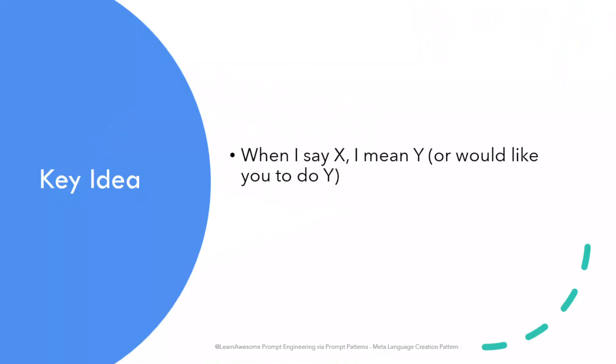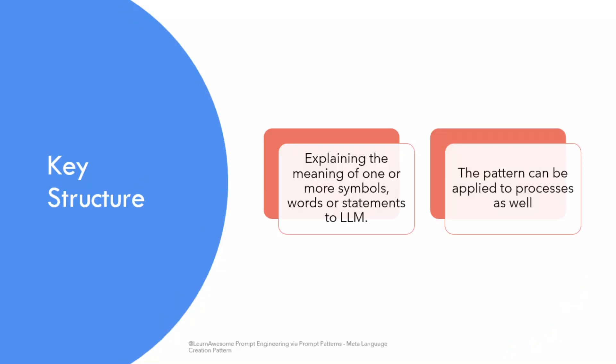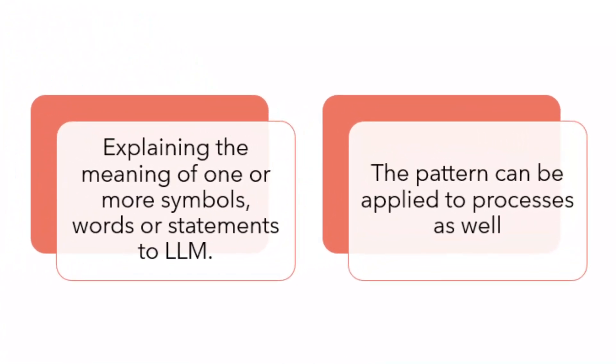Very simply put, the key idea of this pattern can be summed up in a contextual statement: "When I say X, I mean Y" or "would like you to do Y." The key structure of the pattern involves explaining the meaning of one or more symbols, words, or statements to the large language model. So far we have restricted ourselves to examples where we describe things or processes in a concise, short way to the large language model.